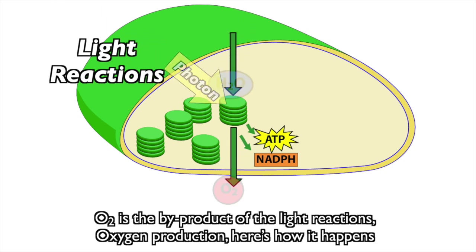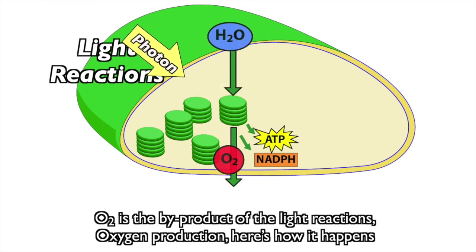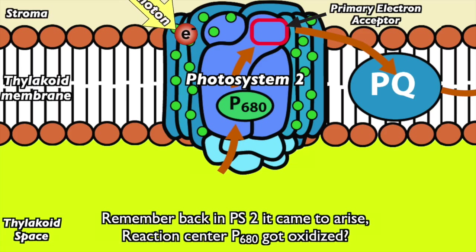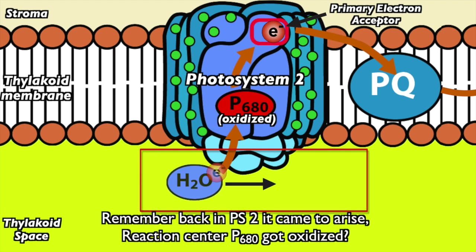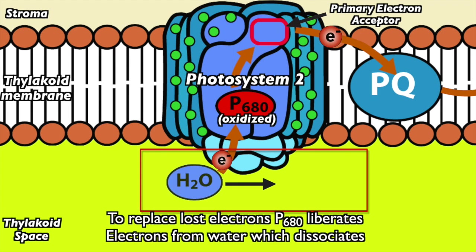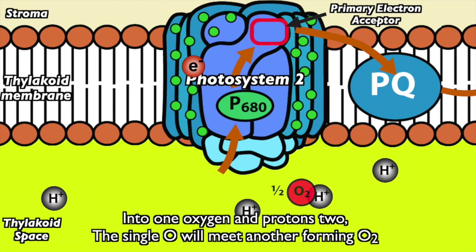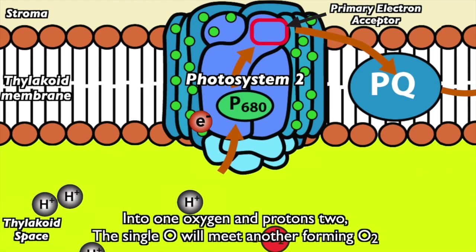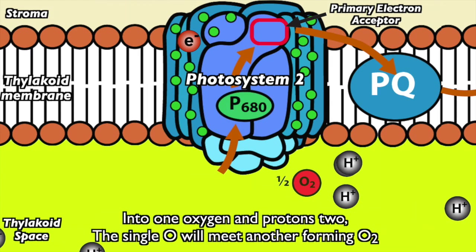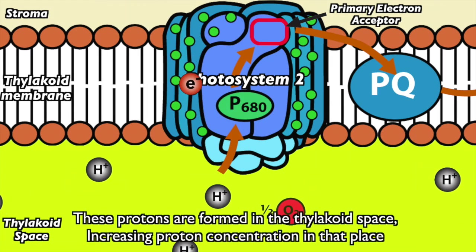O2 is the byproduct of the light reactions — oxygen production. Here's how it happens. Remember back in PS2, reaction center P680 got oxidized. To replace lost electrons, P680 liberates electrons from water, which dissociates into one oxygen and protons too. The single O will meet another forming O2.